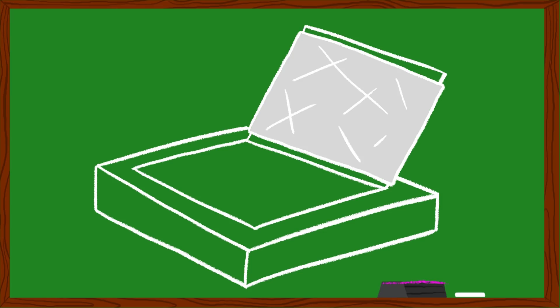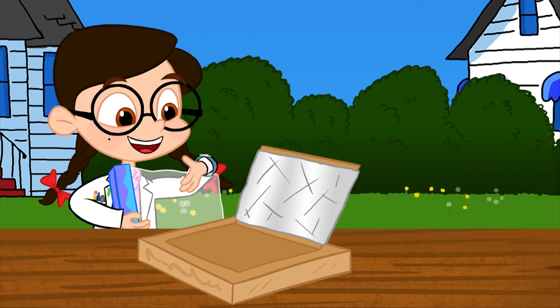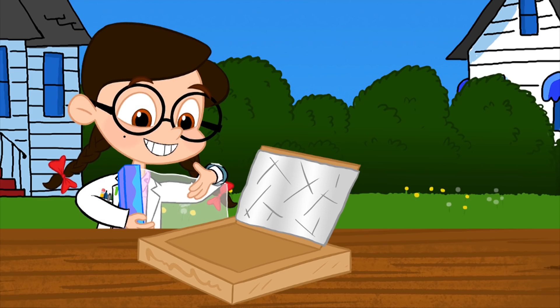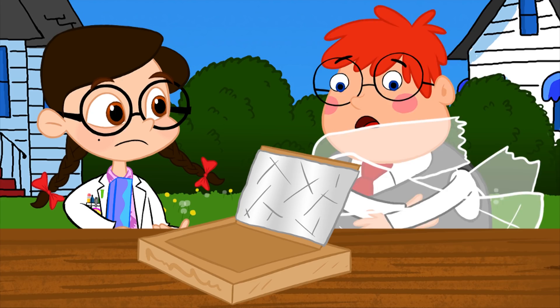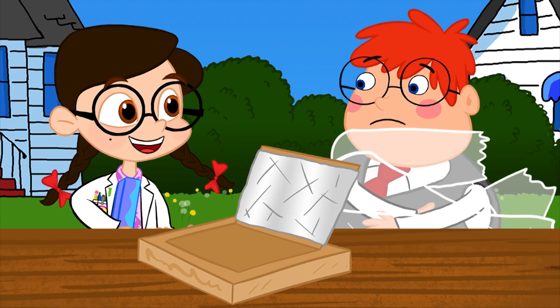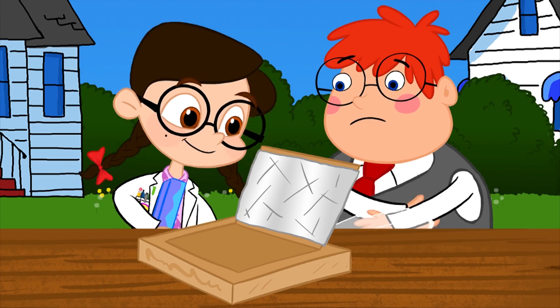Next up, cover the inside of the flap with aluminum foil. This will help reflect rays from the sun into the box. Tape the foil to the back of the flap so it stays in place. Then grab your plastic wrap and tear off a big piece, like this. I'm stuck! Help! Need a hand? Yes, please!